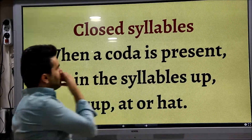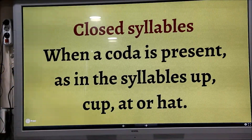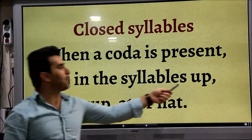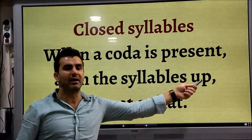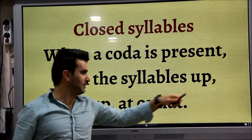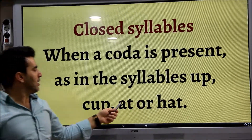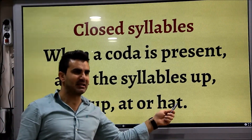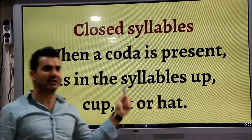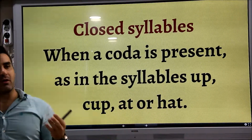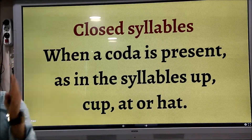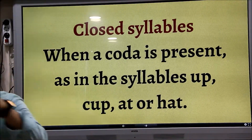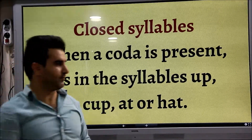Closed syllables — when a coda is present, as in the syllables 'up,' 'pep,' 'cup,' 'et,' or 'hat.'